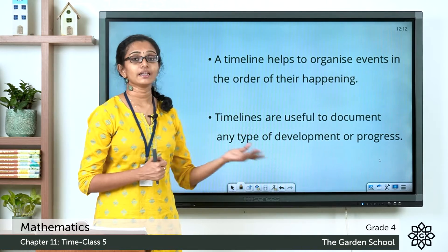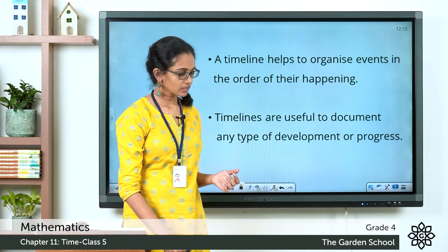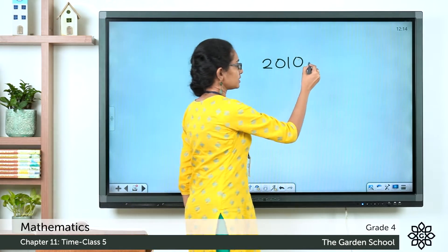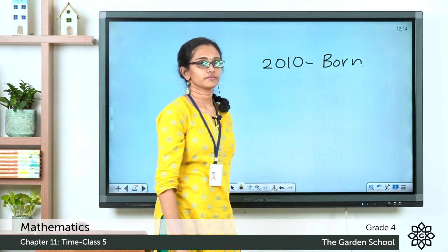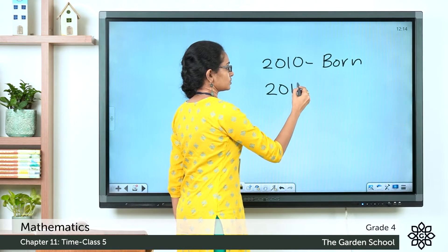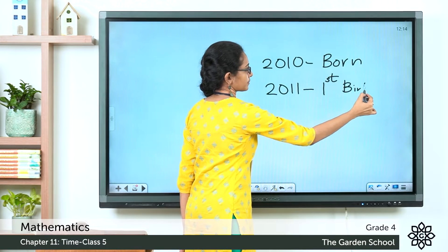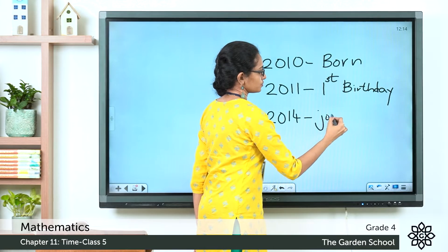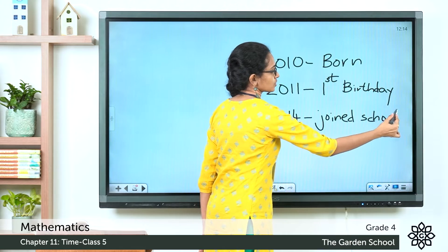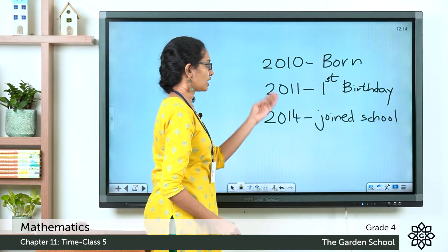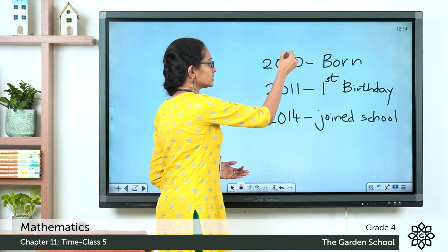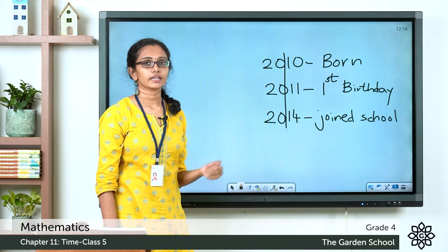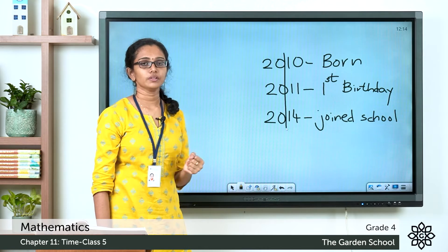Here is a simple example to understand a timeline. Suppose you were born in the year 2010 — you write 2010 and then 'born.' In 2011 you turned one, so you write 'first birthday.' In 2014 you turned four and joined school, so you write 'joined school.' These three major events in your life are arranged in order of their occurrence along a line — this is called a timeline.